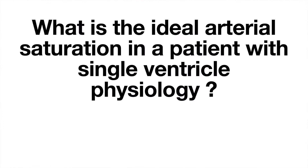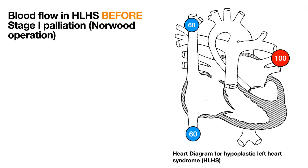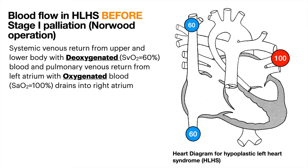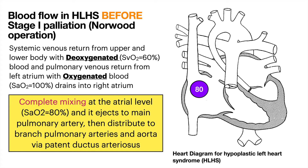The ideal arterial saturation in a patient with single ventricle physiology is 75% to 85%. In the diagram showing blood flow in an HLHS patient before Stage 1 palliation, systemic venous return from the upper and lower body carries deoxygenated blood at sat 60%, while pulmonary venous return carries oxygenated blood at sat 100% draining into the right atrium. Complete mixing occurs at the atrial level, sat becomes 80%, and blood ejects to the main pulmonary artery, then distributes to branch pulmonary arteries and the aorta via the PDA.